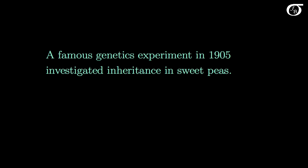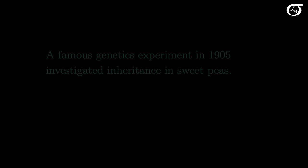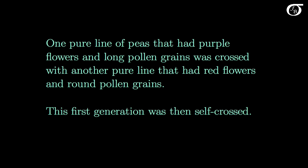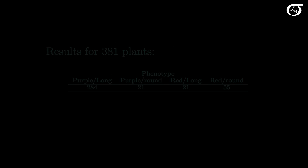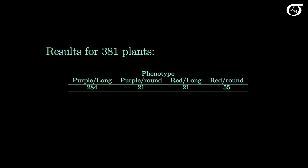The example we're going to work through is a famous genetics experiment in 1905 that investigated inheritance in sweet peas. One pure line of peas that had purple flowers and long pollen grains was crossed with another pure line that had red flowers and round pollen grains. This first generation was then self-crossed. Here are the results for the resulting 381 plants.